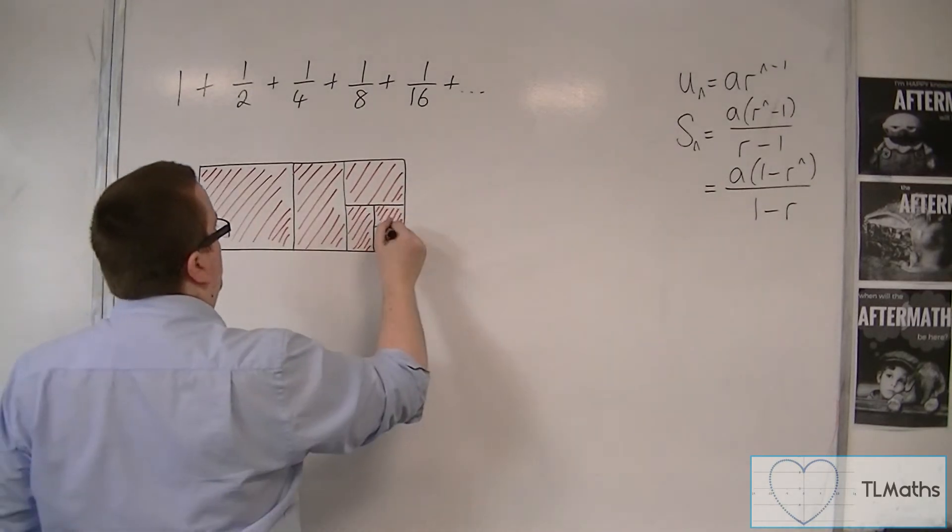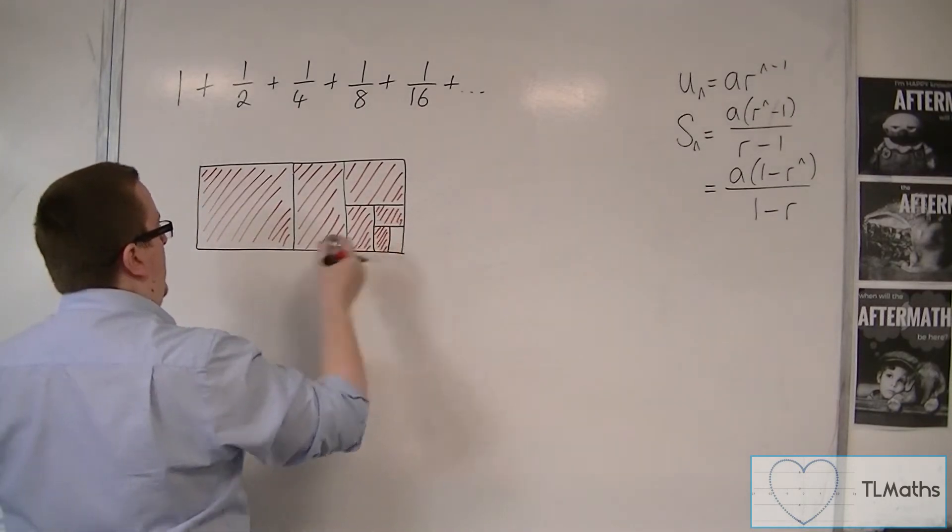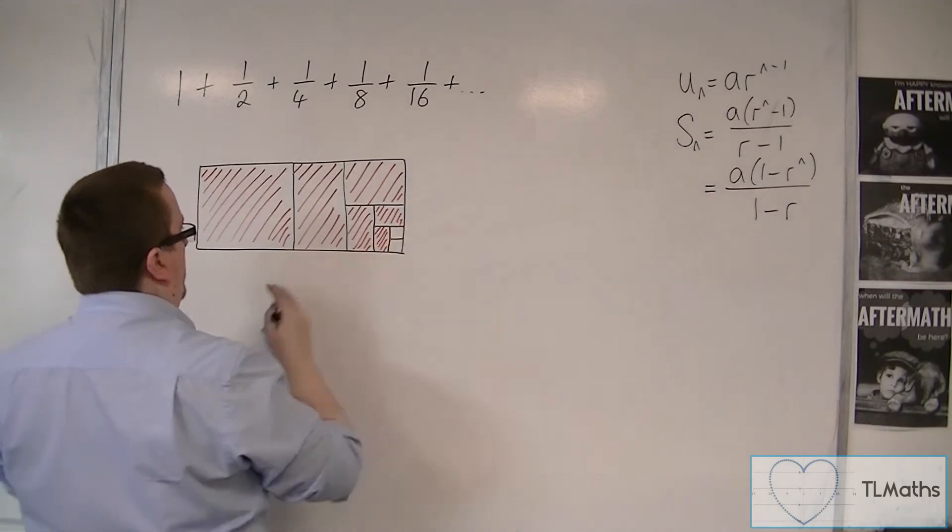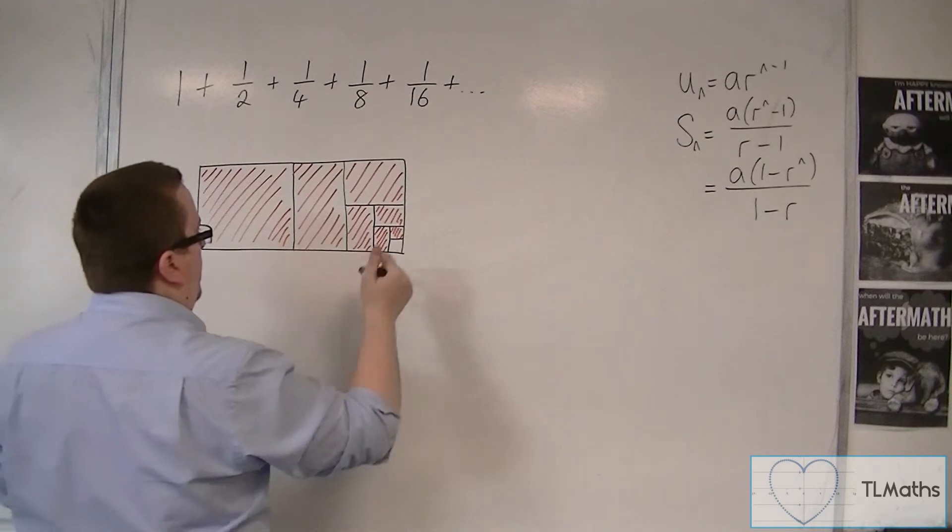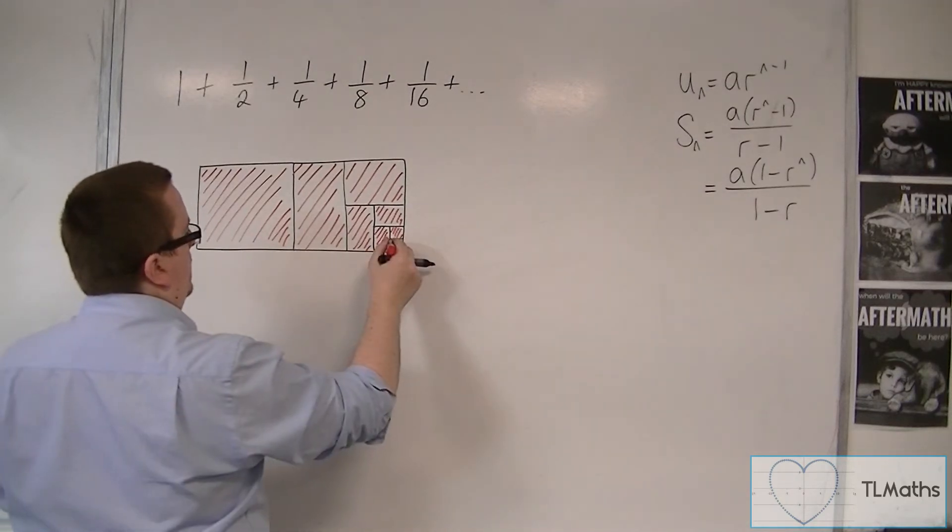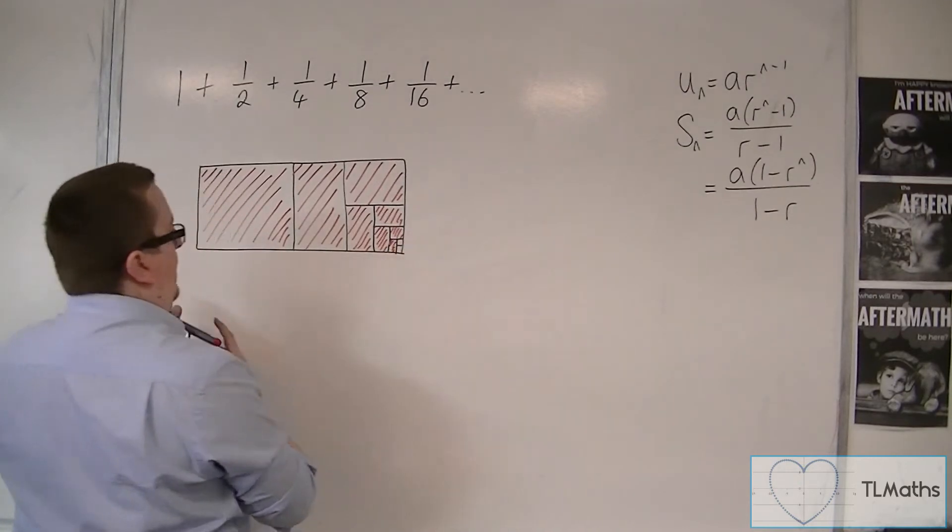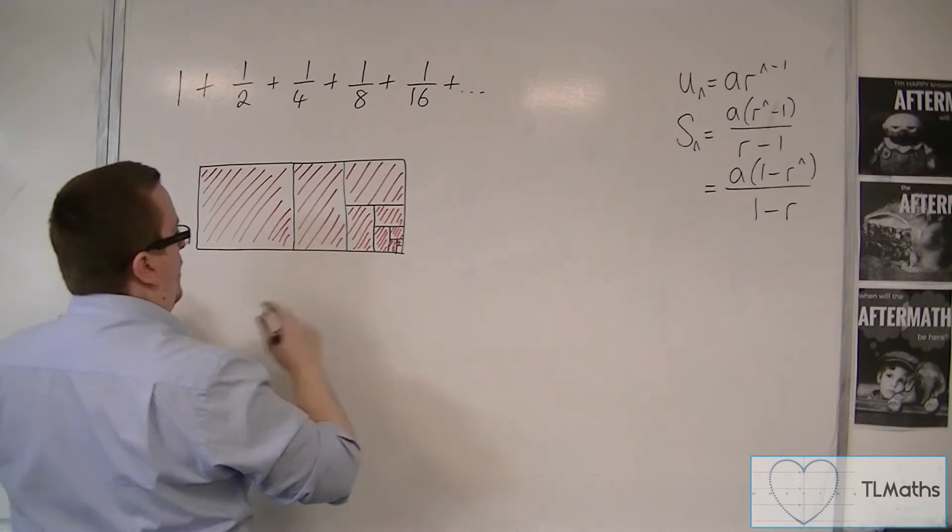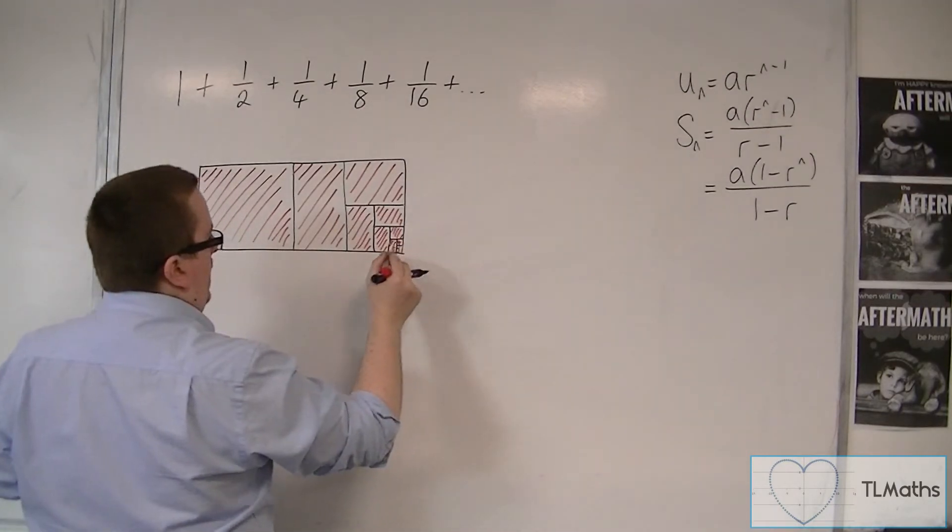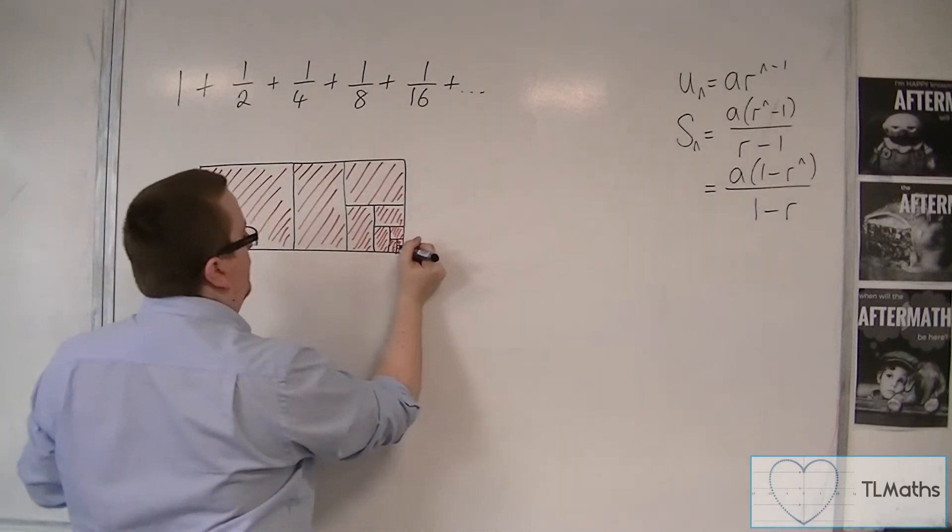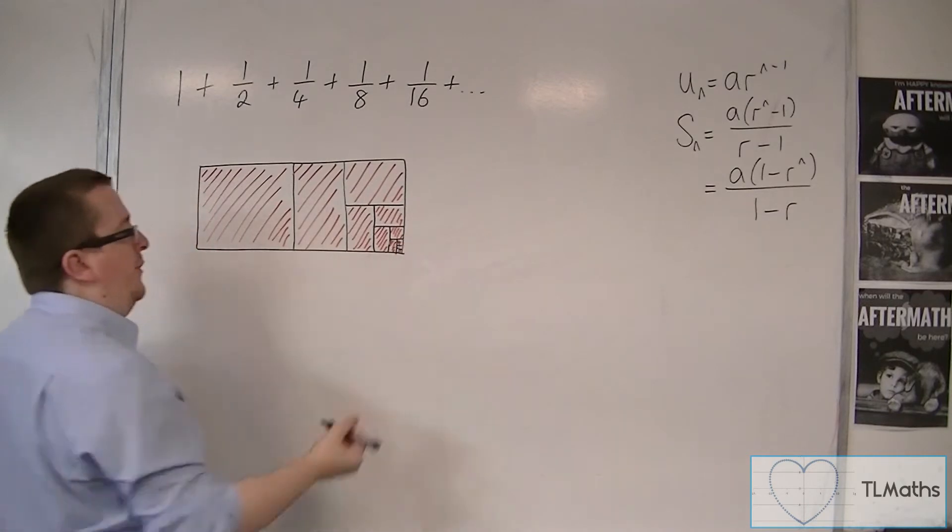And I'm going to keep going. I'm going to go to a 1 over 32. So I'm going to add that bit on. Then I'm going to keep going. And that's a 1 over 64. And then that's a 1 over 128. And then that's a 1 over 256. And then I'd have a 1 over 512. And then I'd have a 1 over 1024. And 2048. And so on and so on and so forth.